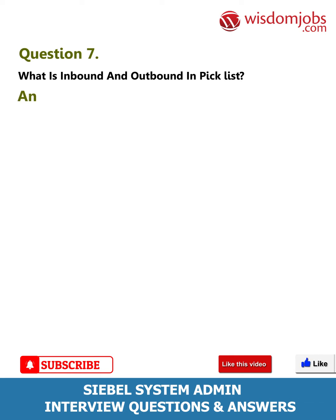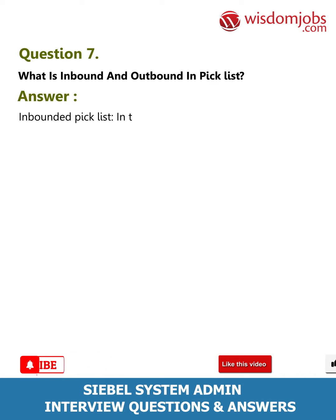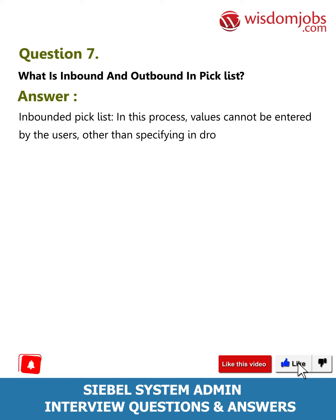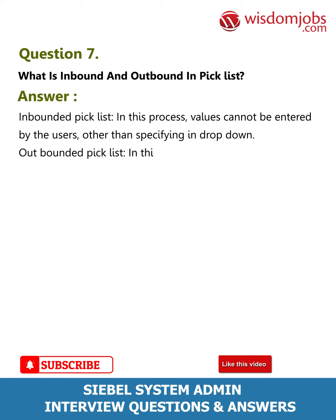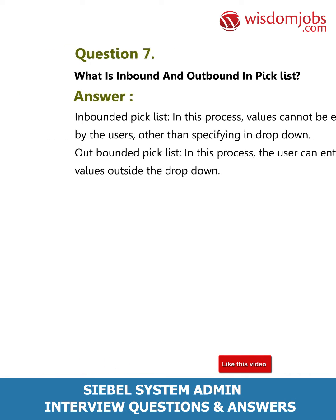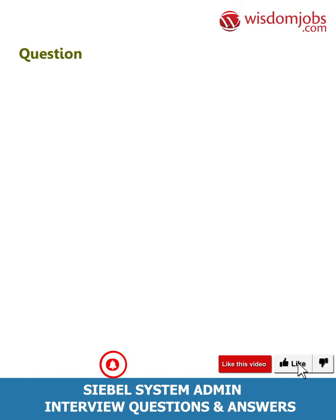Question 7: What is inbound and outbound in a pick list? Answer: Inbound pick list — in this process, values cannot be entered by the users other than those specified in the drop-down. Outbound pick list — in this process, the user can enter any values outside the drop-down.